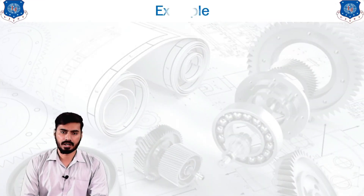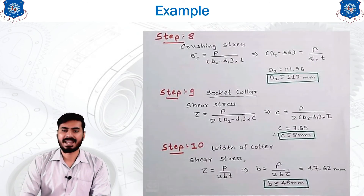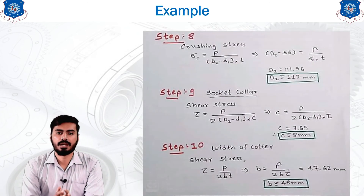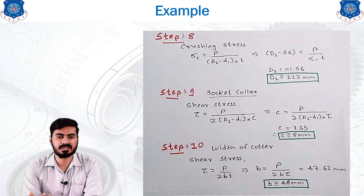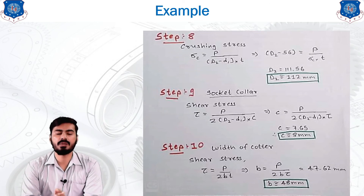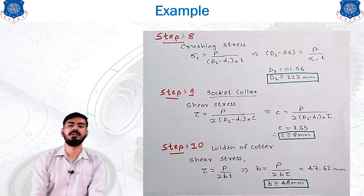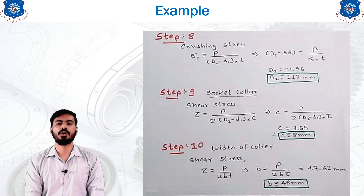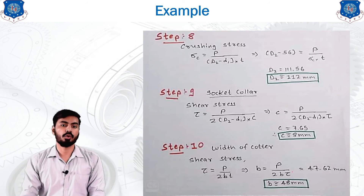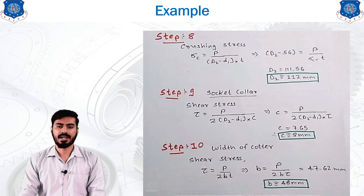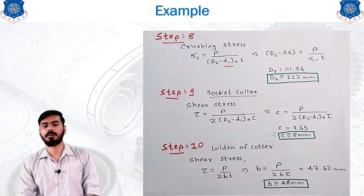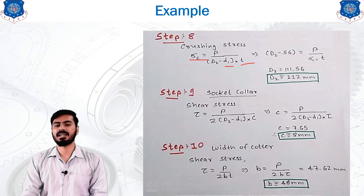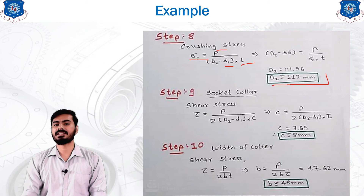Step 8 is designed using the crushing stress equation: σc = P / ((d2 − d1) · t). This equation contains d2 as the only unknown. Substituting the values of d1, t, σc, and P, d2 = 112 mm.